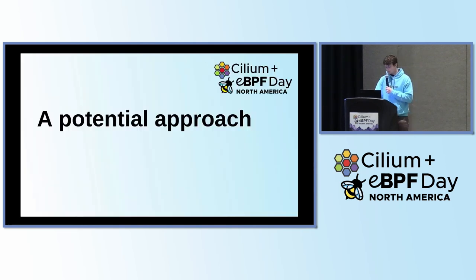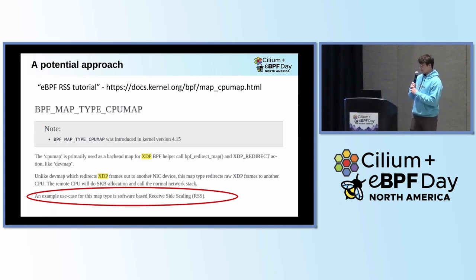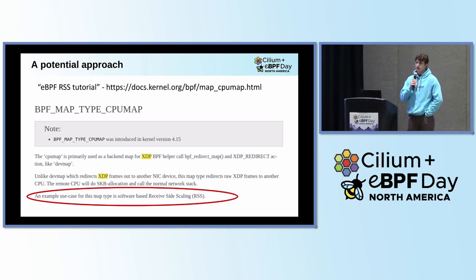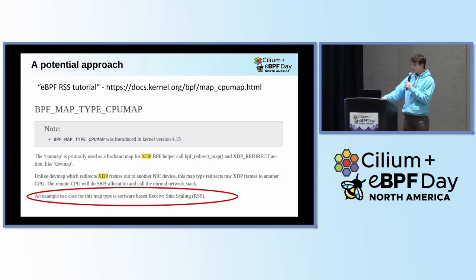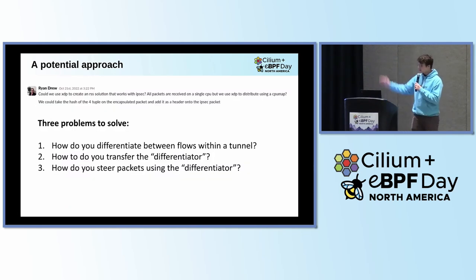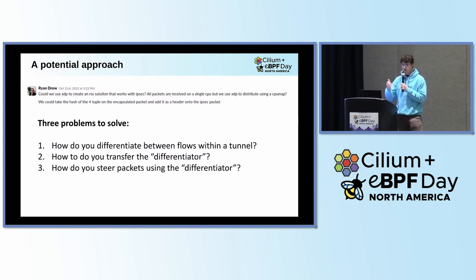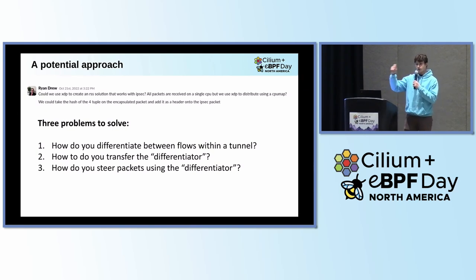I was pretty new to eBPF when I learned about this, so I Googled 'eBPF RSS tutorial,' which landed me on the kernel documentation page for the XDP CPU map. This map was built specifically for software-based RSS, also known as receive packet steering — RSS performed by software inside an XDP program. We can use the helper BPF redirect map to steer a packet to any CPU we want when it's received. But there were three problems to solve before moving forward: we needed to figure out how to differentiate between flows within a tunnel; how to transfer that metadata from the sender to the receiver so the receiver can use it for RSS; and how to actually perform that steering on the receiver side.